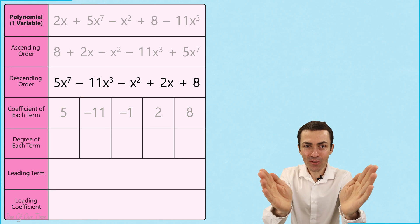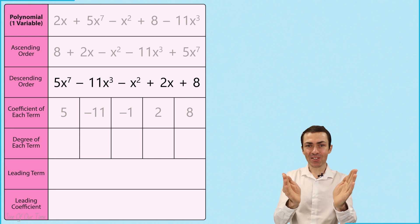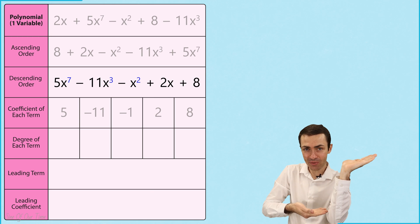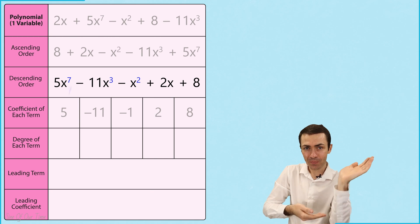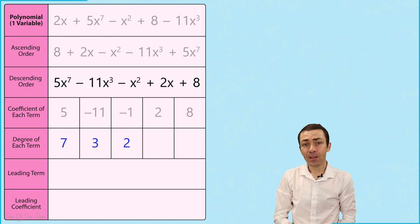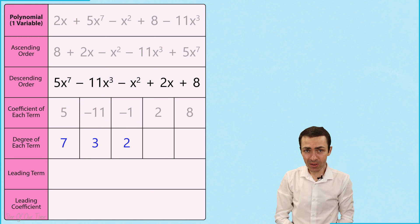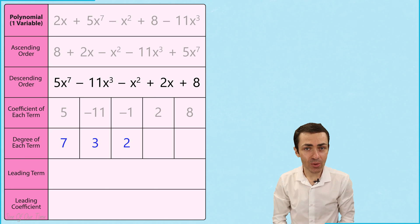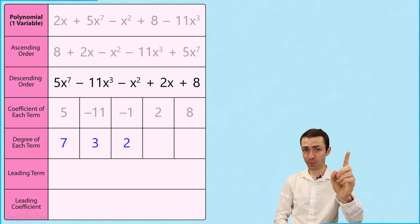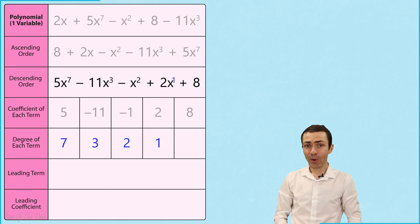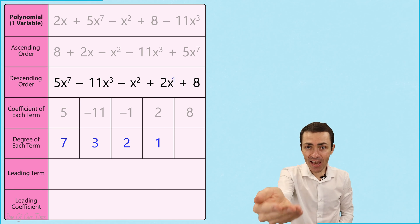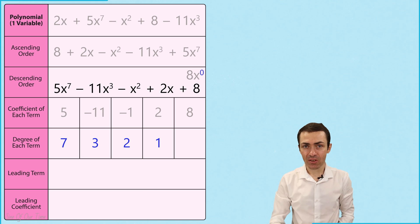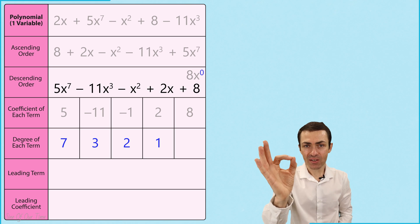The degree of each term is simply the exponent of the variable of each term. In this polynomial, 2x can be written as 2x to the power of 1, while as we've said, 8 can be written as 8x to the power of 0.